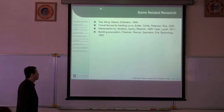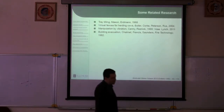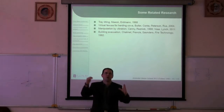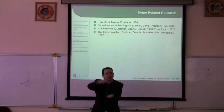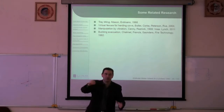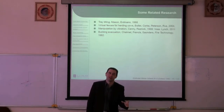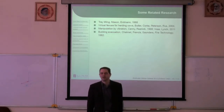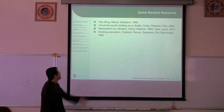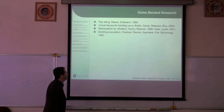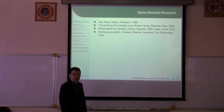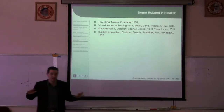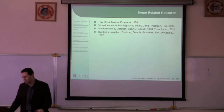There's a lot of related research: tray tilting, where Mason and Irwin put an L-shaped wrench in a tray and tilt it different ways — after a few tilts they can guarantee the wrench is always in the same orientation. There are also ideas of virtual fences for herding animals, manipulation by vibration, and strategies for evacuating buildings — really trying to control the flow of humans in an emergency.